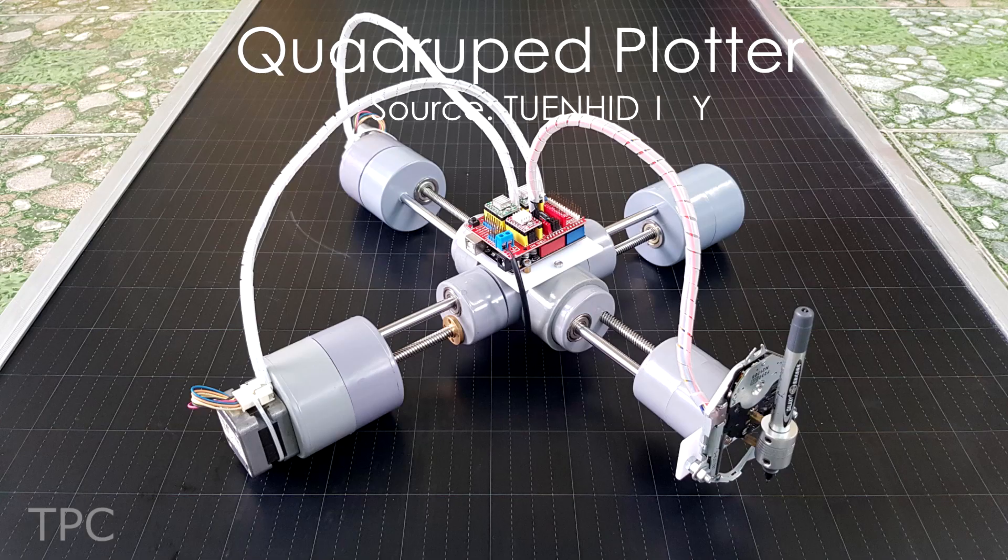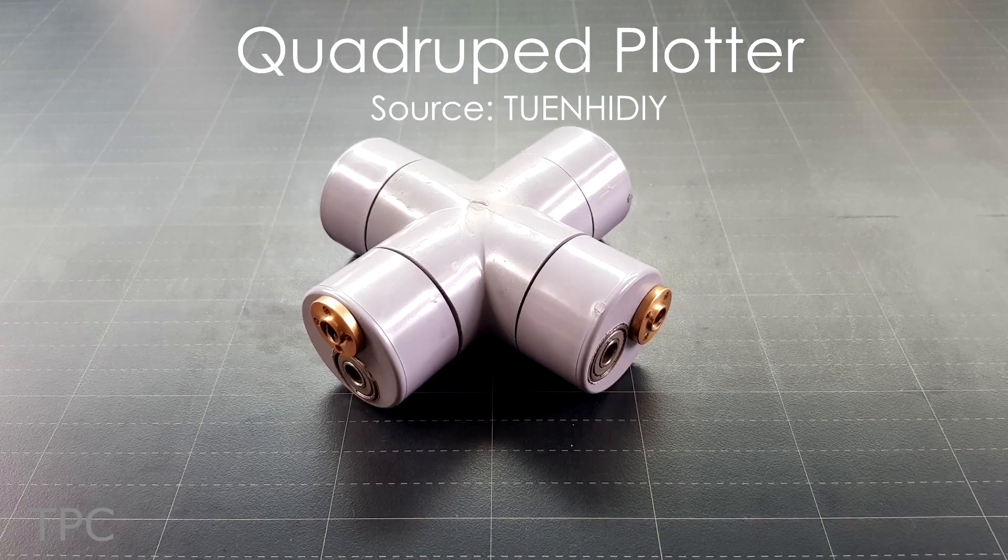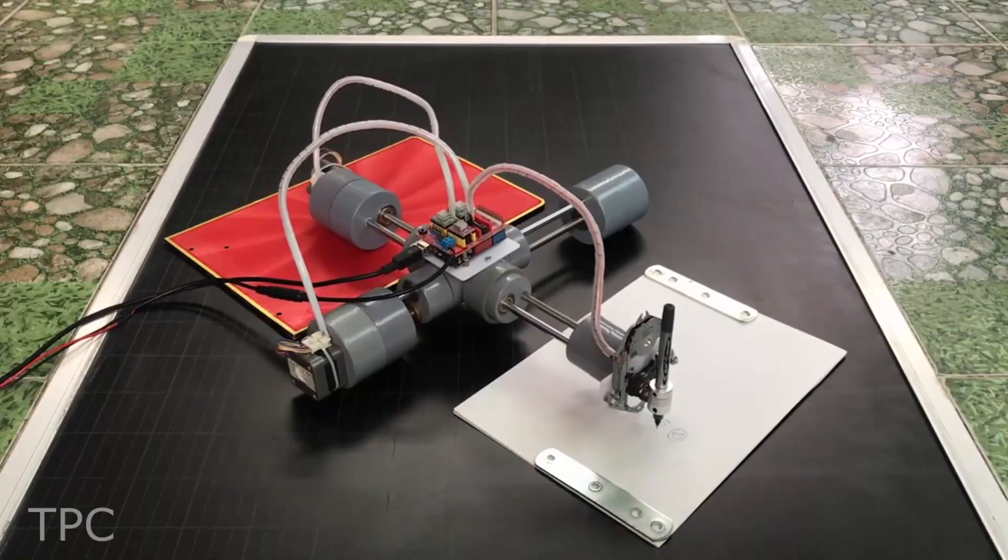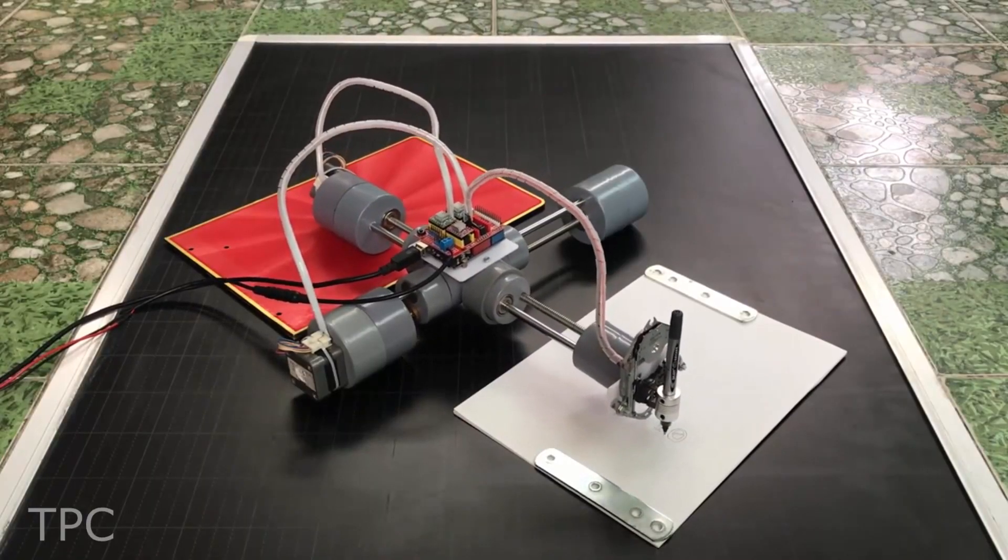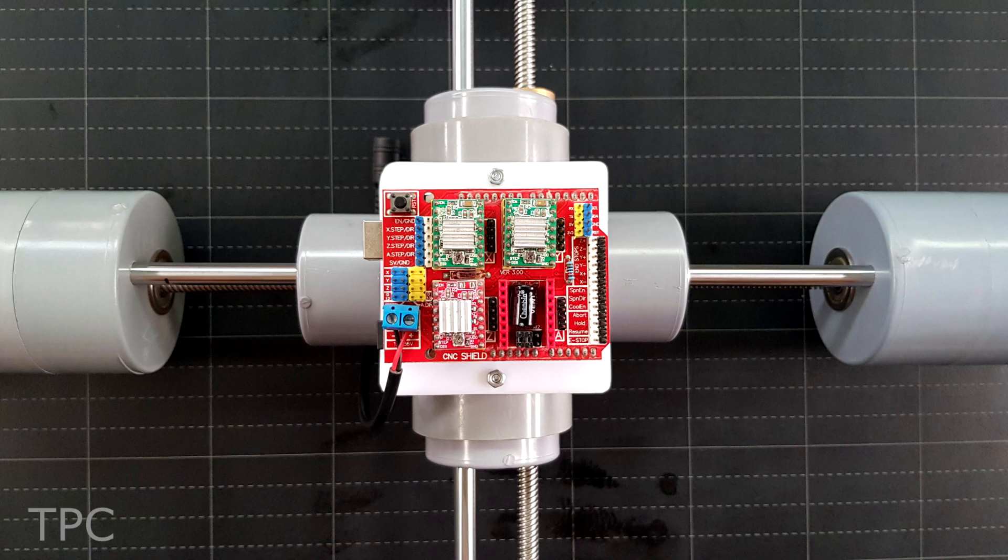This is another portable CNC plotter made using several PVC pieces and a couple of motors. The plotter resembles a quadruped robot that has an Arduino Uno and a CNC shield at its heart.